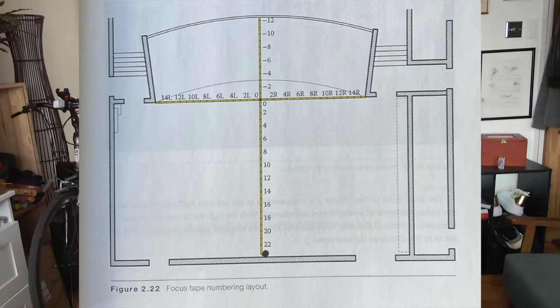Each show should buy their own tapes. You'll buy them, mark them up, decide how you're going to grid the stage, and the show pays for that because the focus tapes stay with the show. It's a consumable item. If it's touring, all the more reason you need those focus tapes. If it's a maintenance call in the West End, they'll roll these tapes out to check focuses on the lights. The focus grid PDF in the Dropbox shows how you create the stage layout.